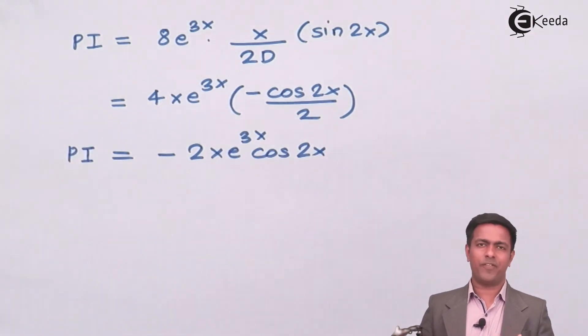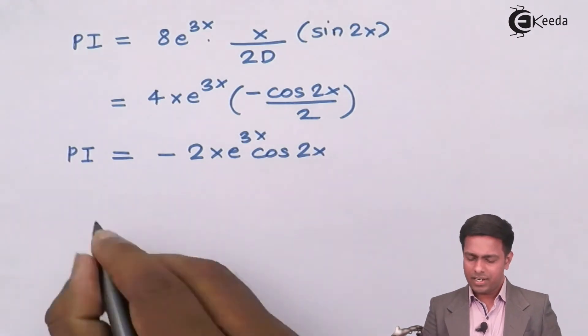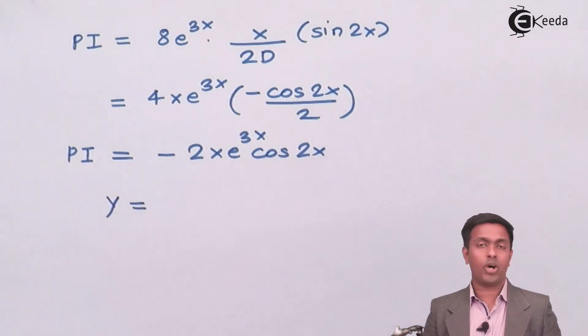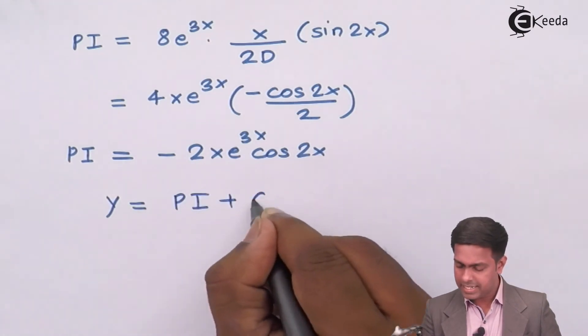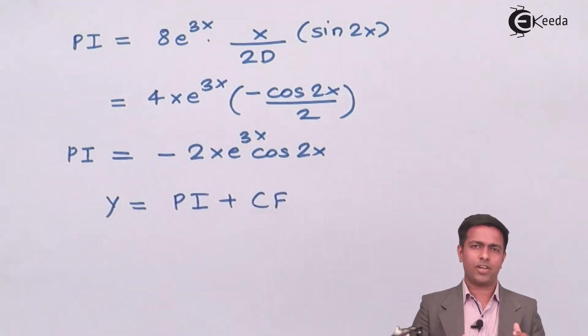We got the value of complementary function and particular integral. Now the last step is PI + CF that is addition of particular integral and complementary function will give me the complete solution or the final solution. You just have to copy down these two values to get the final answer.